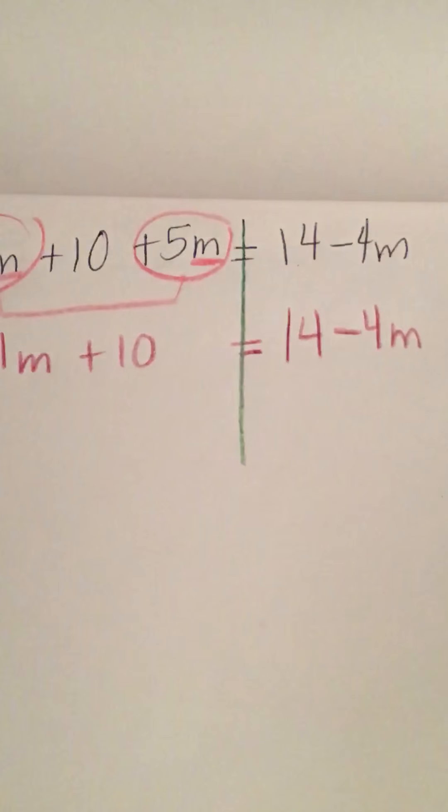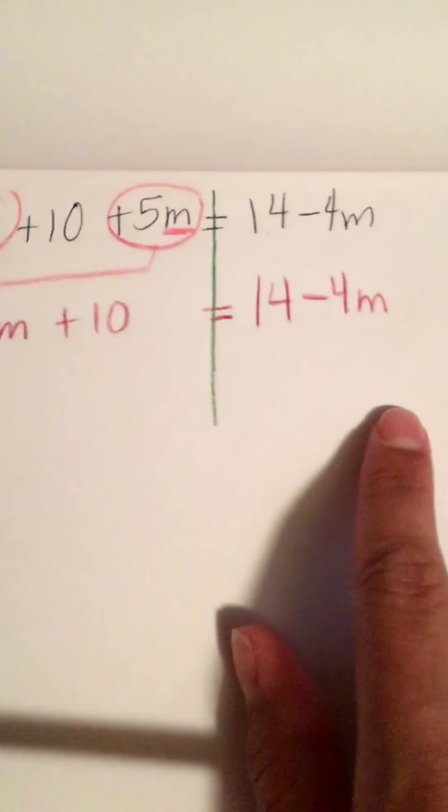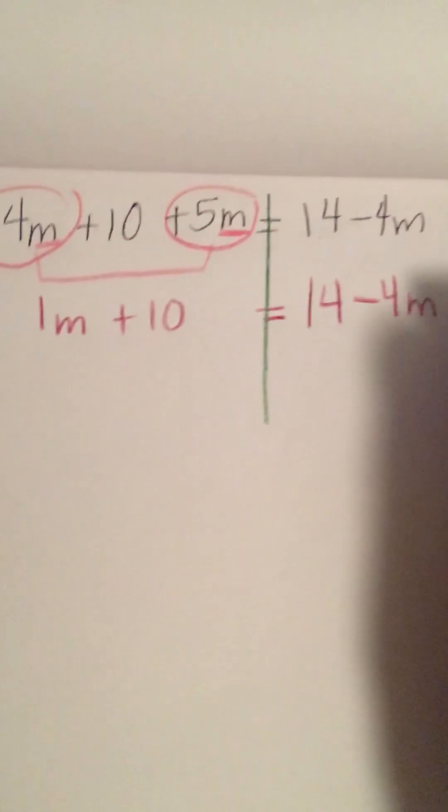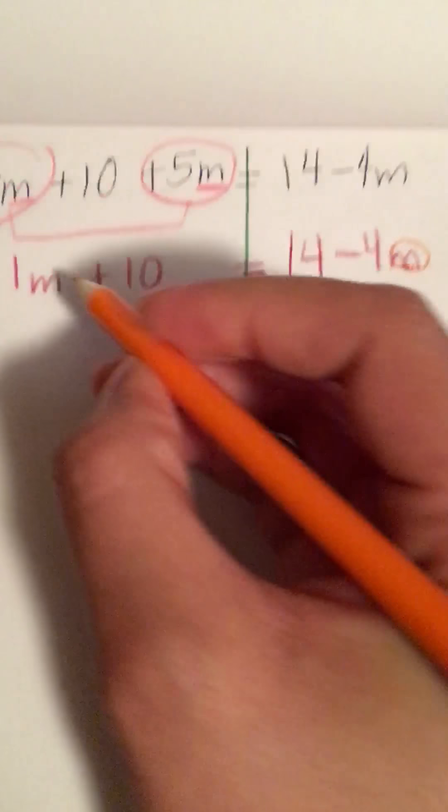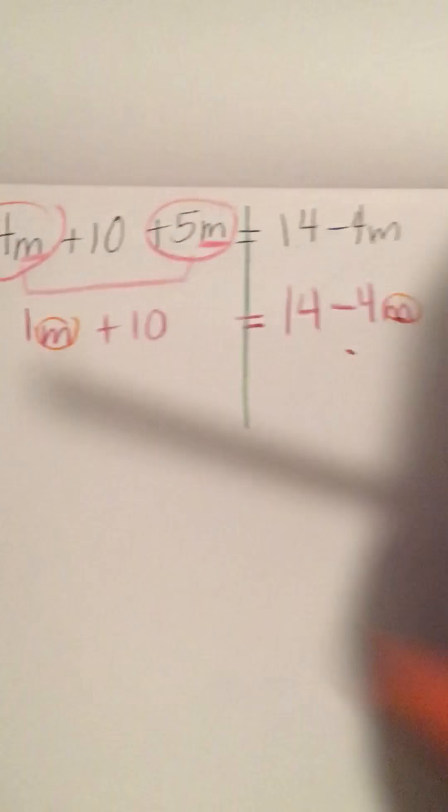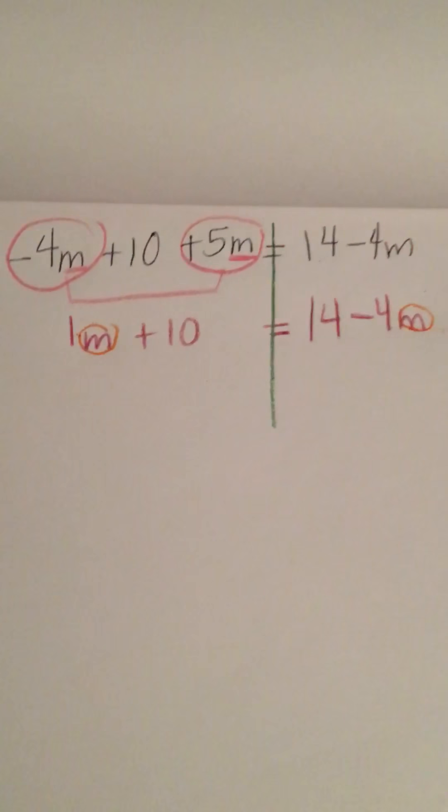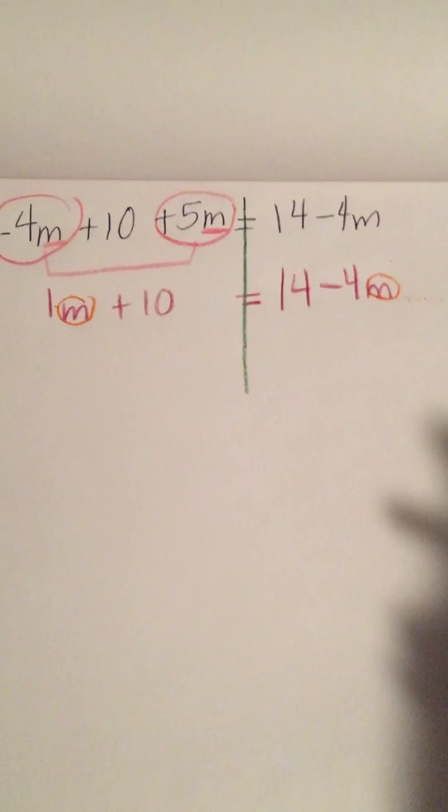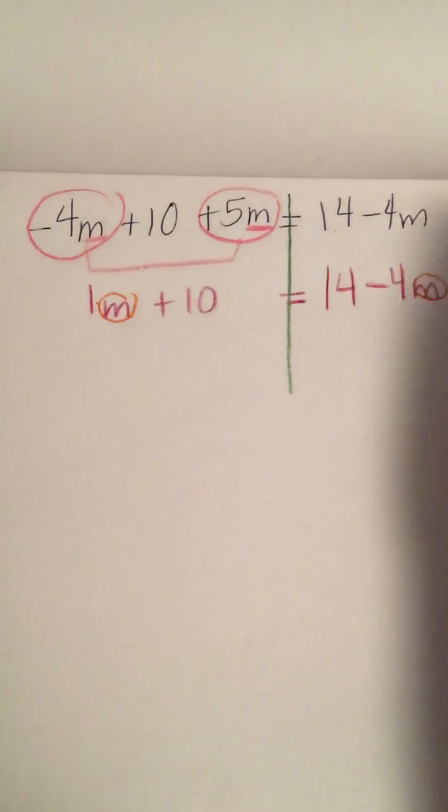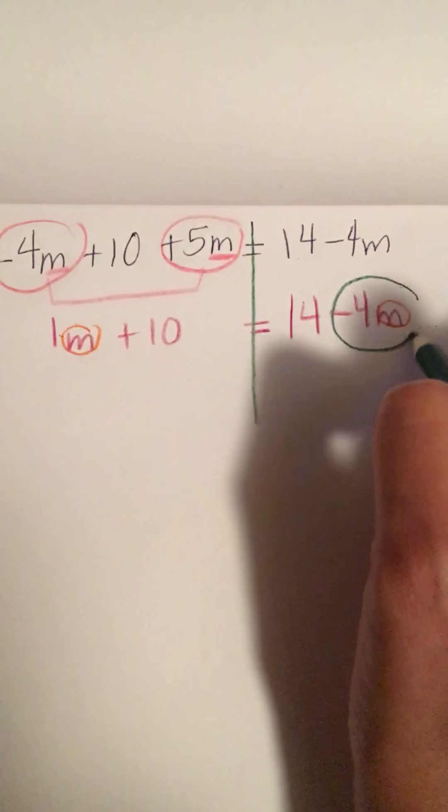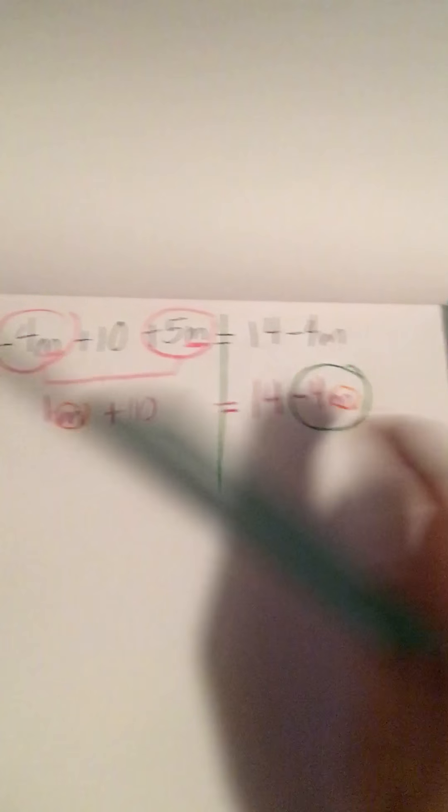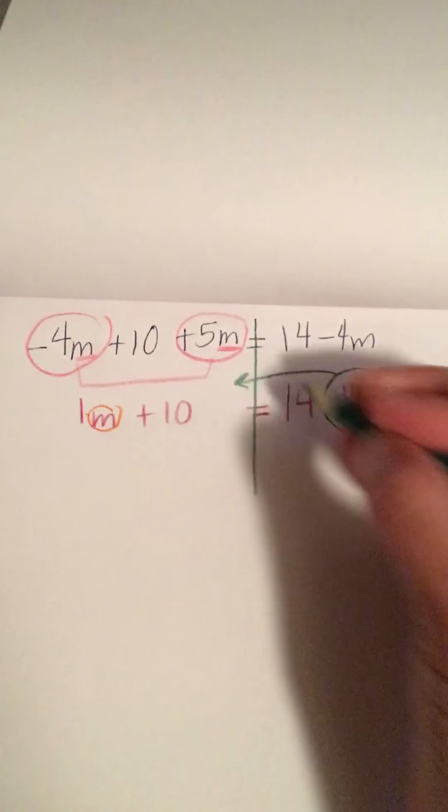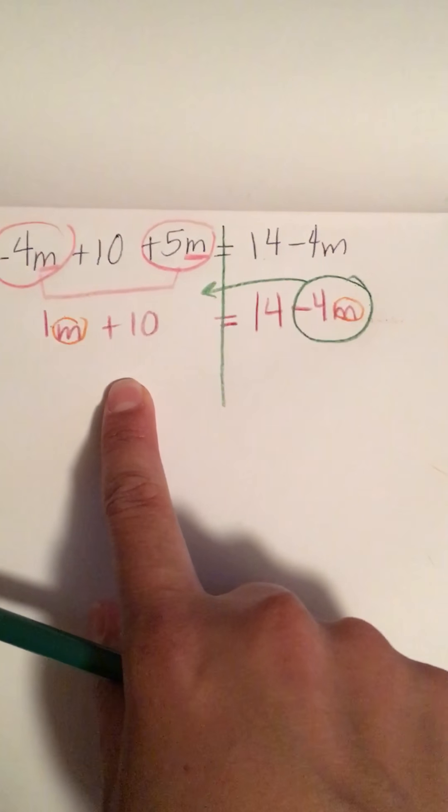You notice how there's an M here and an M over here, which means they're in different teams. I have to move them to the same one, so I'm going to decide that I want to move this one. I will circle it together with the sign, put an arrow, I'm going to move it to the other side.